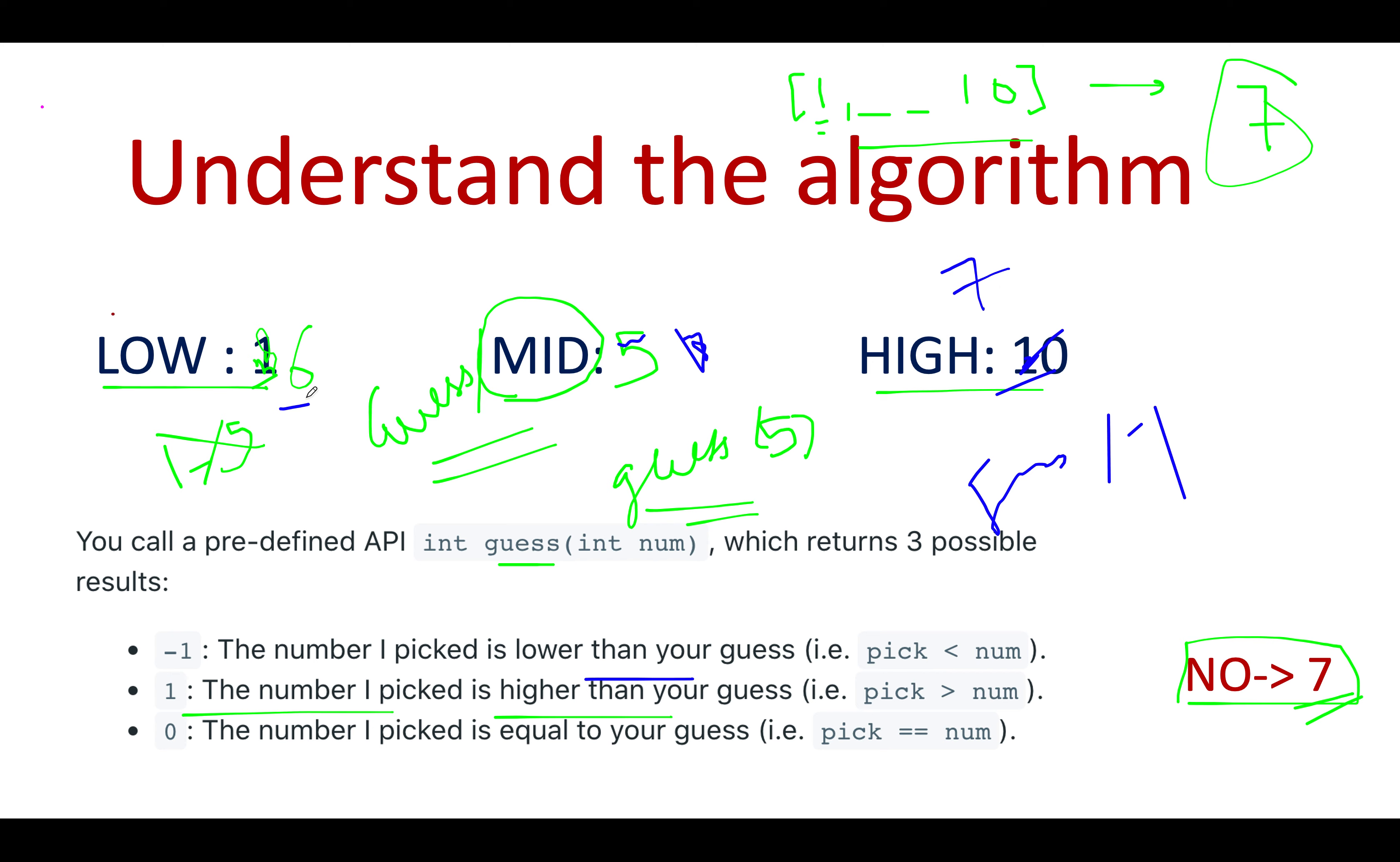Now let's continue the process. Low plus high is 13, 13 by 2 is six. We'll get minus one. So what we should do: we should update low to mid plus one, which is seven.